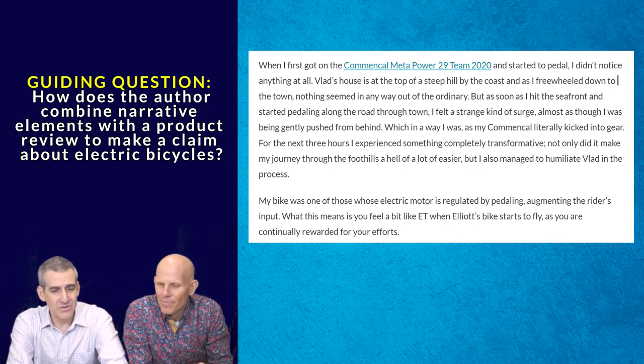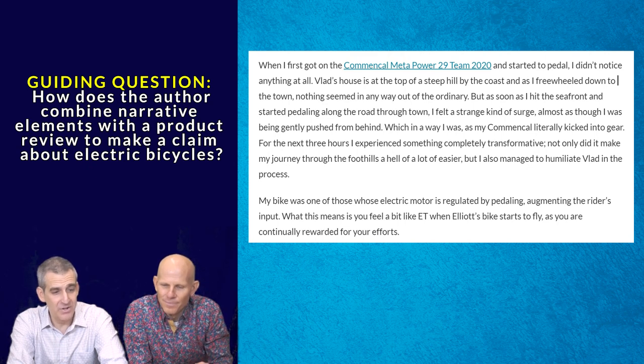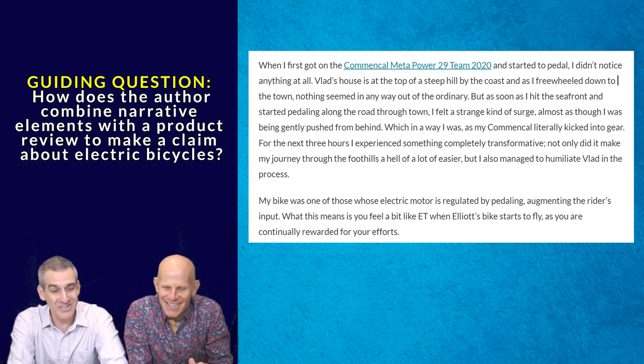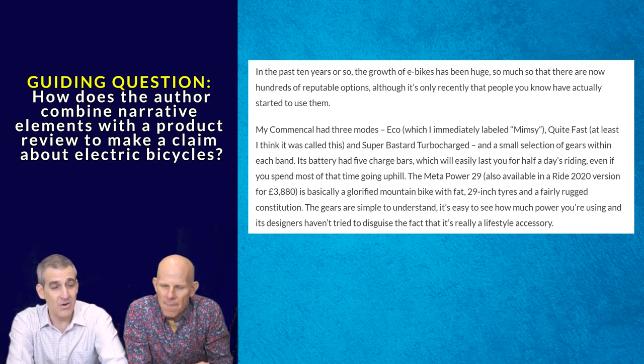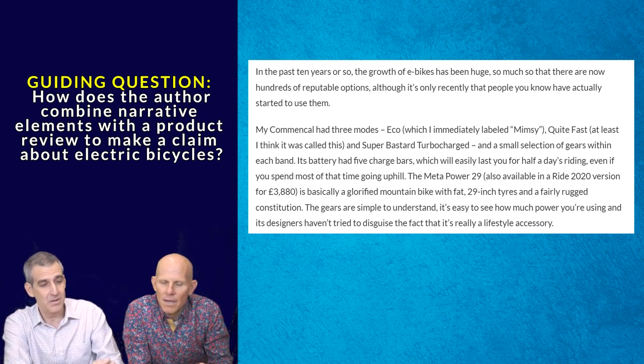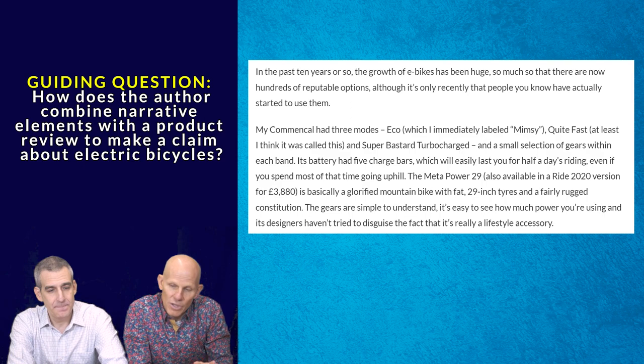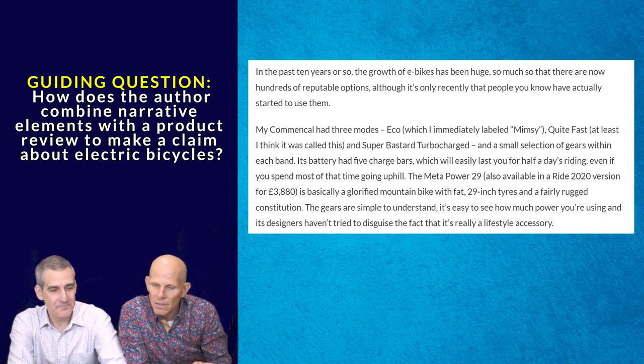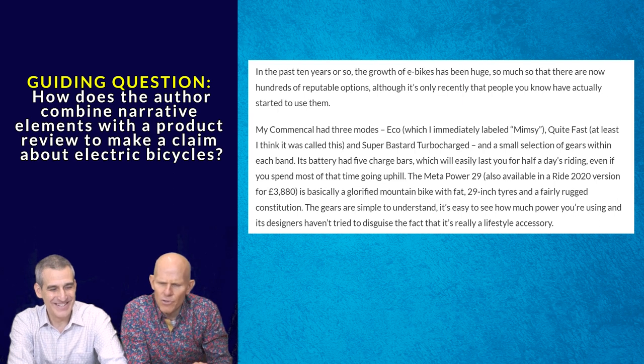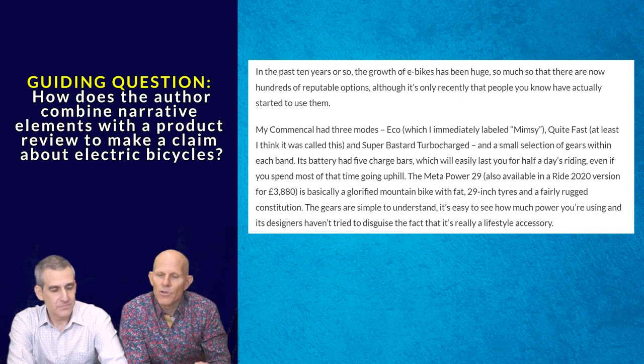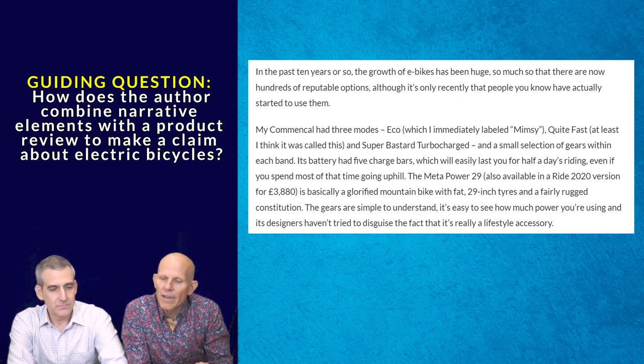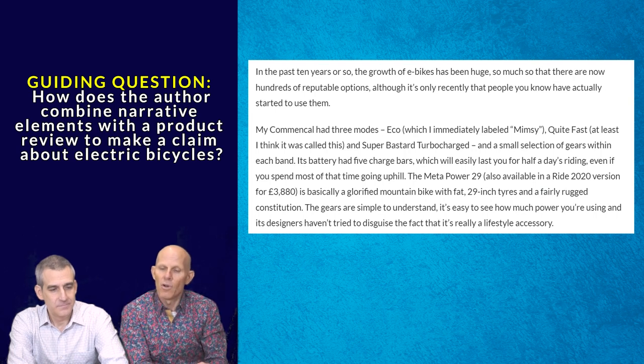My bike was one of those whose electric motor is regulated by pedaling, augmenting the rider's input. What this means is you feel a bit like ET when Elliot's bike starts to fly, as you are continually rewarded for your efforts. In the past 10 years or so, the growth of e-bikes has been huge, so much so that there are now hundreds of reputable options, although it's only recently that people you know have actually started to use them. My Commencal had three modes: Eco, which I immediately labeled Mimsy, Quite Fast, at least I think it was called this, and Super Bastard Turbocharged, and a small selection of gears within each band. Its battery had five charge bars, which will easily last you about half a day's riding, even if you spend most of that time going uphill.